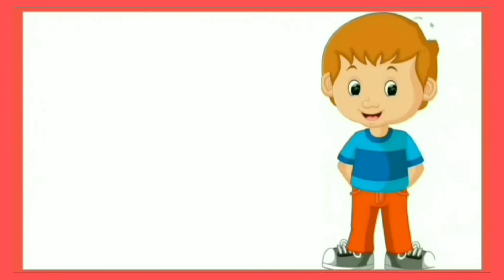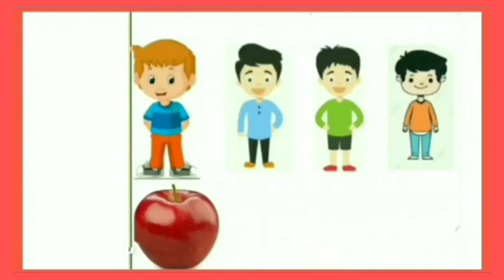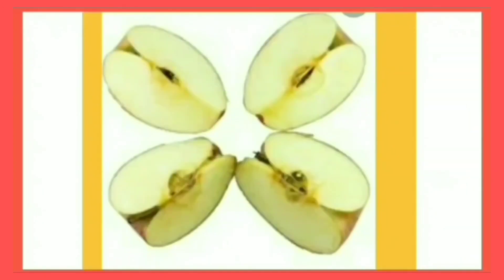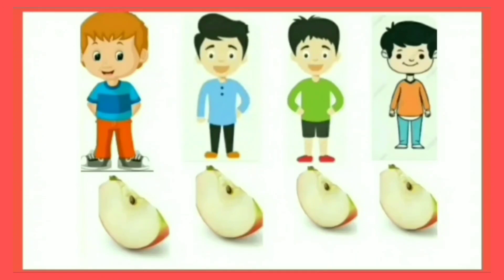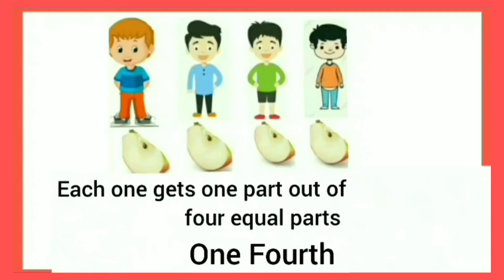Here is Aman. One day he returned from the playground and felt very hungry. He opened the fridge and there was an apple inside. Aman picked up the apple and was going to eat it when suddenly his friends came to his house. They were four in number but Aman had only one apple. So Aman decided to cut the apple into four equal parts and distributed one part to each of them. Each one gets one part out of four equal parts, and when we divide one whole thing into four equal parts, each part is known as one-fourth. In numbers, we write it as 1/4.